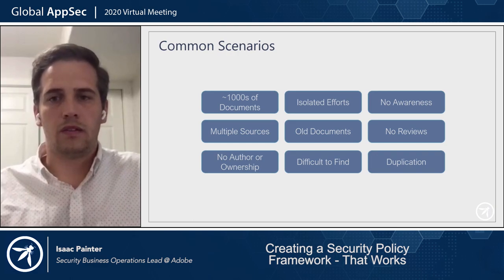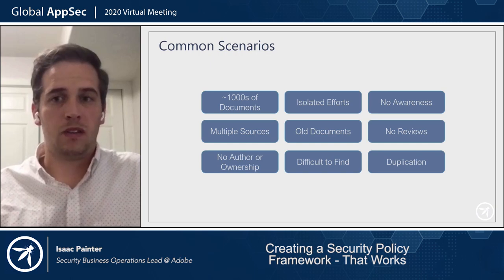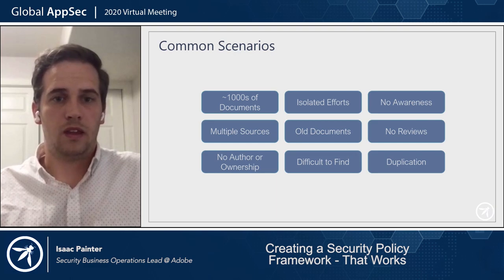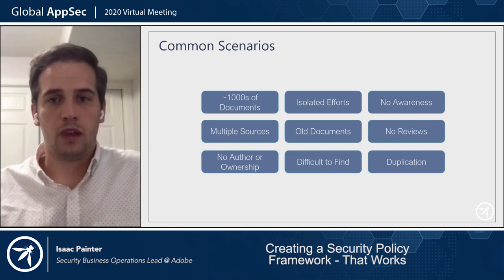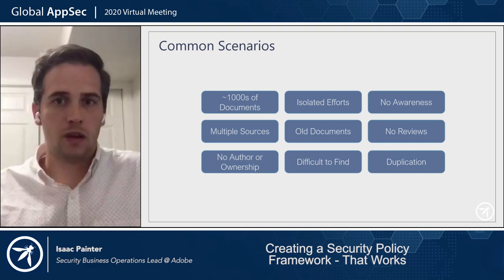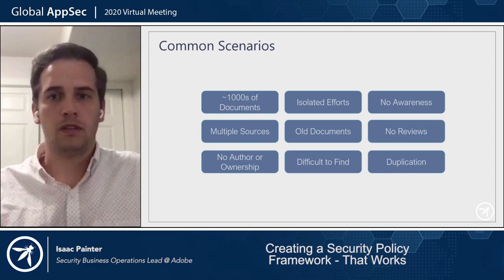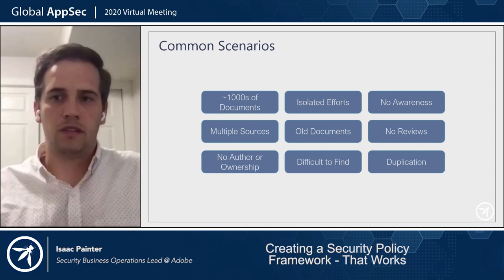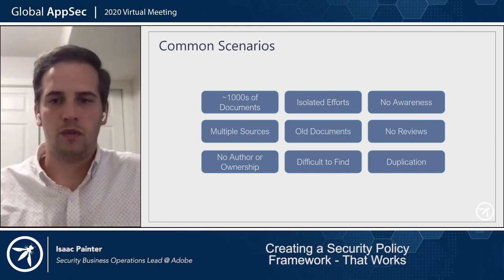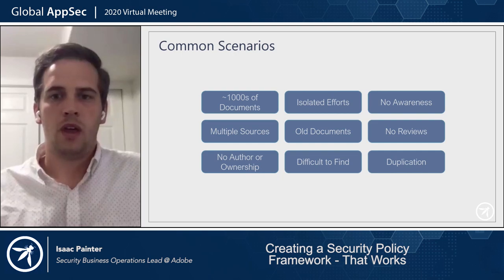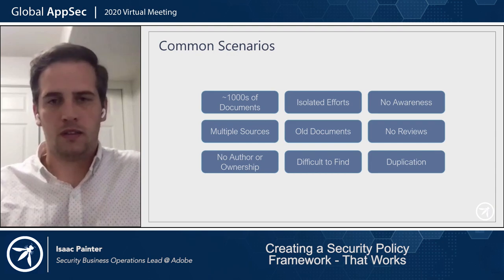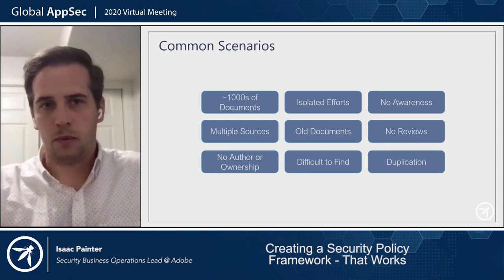The other scenario is you find that you do actually have a policy, but it's been two or three or even ten years since it was last reviewed. The person who wrote it no longer works for the company, and it has a ton of out-of-date information. These are common scenarios across the board — not unique to security policy — where reviews aren't happening, there's no awareness, no authorship or ownership, documents are hard to find, and there are multiple sources.